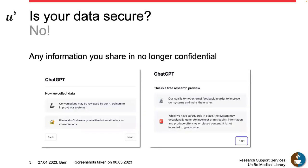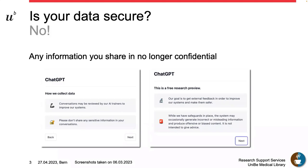The first thing you need to know: when you share anything with ChatGPT, your data is not secure. Screenshots from when I created my ChatGPT account in March show that OpenAI clearly states conversations are reviewed to improve their systems, and they explicitly mention not to share any sensitive information. They describe this as a free research preview with the goal of getting feedback, and they also acknowledge they may occasionally give you incorrect or misleading information.